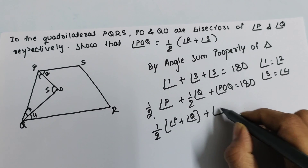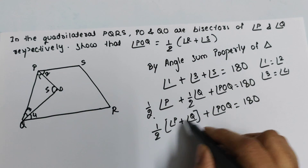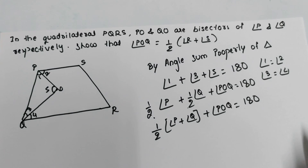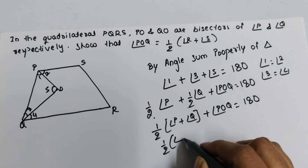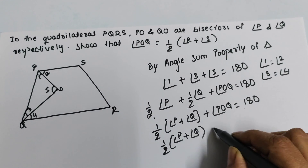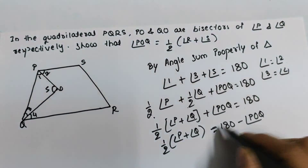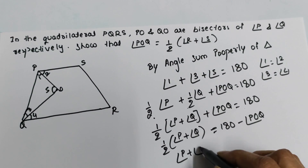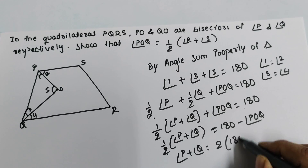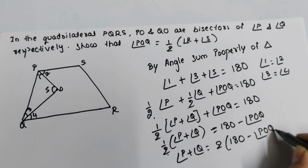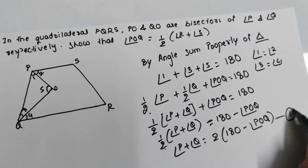We want to isolate angle P plus angle Q, so shifting everything else to the other side: half of angle P plus angle Q equals 180 minus angle POQ. Moving the half to the other side, angle P plus angle Q equals two times the quantity 180 minus angle POQ. We'll call this equation number one.